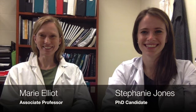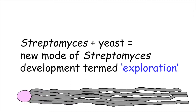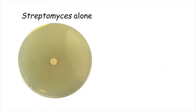Stephanie Jones, a PhD candidate in Marie Elliott's lab at McMaster University, discovered that when you grow Streptomyces next to yeast, they opt for an entirely different mode of growth, termed exploration, that involves the cells moving and spreading away from the yeast.